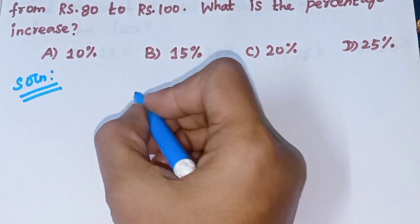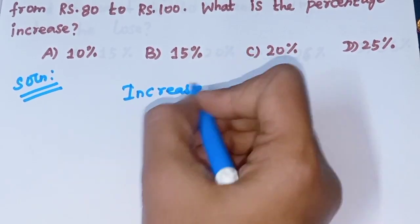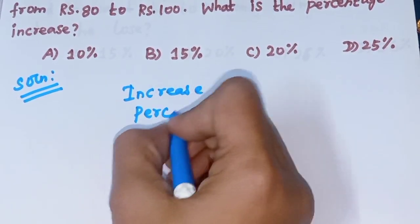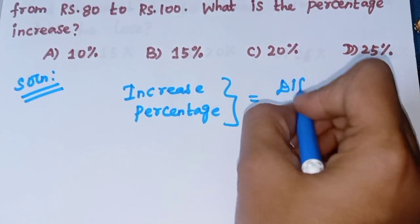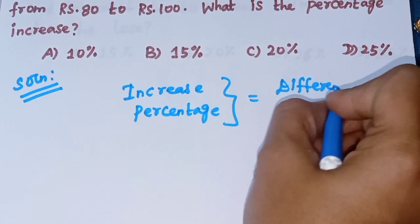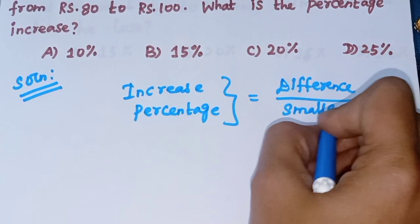Increase percentage is calculated using this formula: increase percentage equals difference divided by smallest number into 100. Difference divided by smallest number into 100.